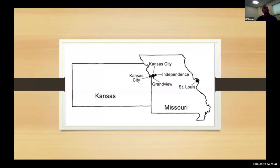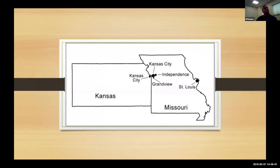Independence is closely connected to Kansas City. On the map, there's an unusual situation where we have two Kansas Cities — a Kansas City, Kansas, and a Kansas City, Missouri, both separated by a state line. They are two separate cities with separate governments, separate mayors, different school districts, but they share the same name. It's confusing for people who don't live in the Kansas City metropolitan area. Independence is just 20 minutes from Kansas City, Missouri, and both cities were closely connected to Harry Truman's life as he grew up.